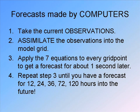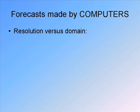There are certain things we can do to make this process work better, run faster, or give us the information we need without wasting time on things we don't need. One tradeoff that would make the programs run faster is the difference between the resolution of the forecast and the domain of the forecast.